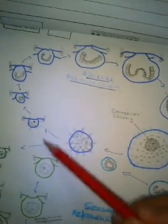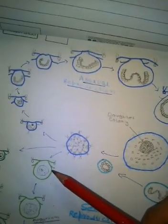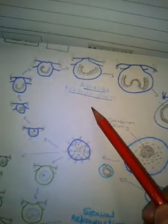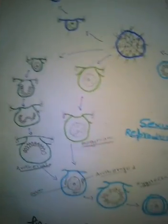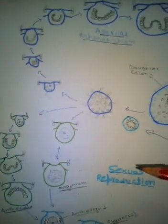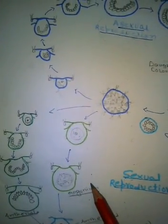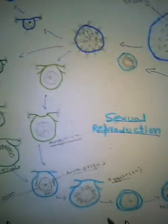The cells which take part in reproduction are called gonidium or reproductive cells. Asexual reproduction takes place by means of zoospore formation. In sexual reproduction, the male gametangium is the antheridium and the female is the oogonium. They fuse to form a zygote, after which a new individual is formed.